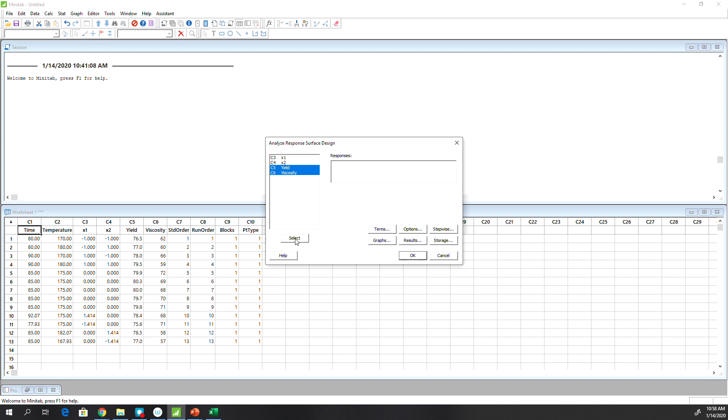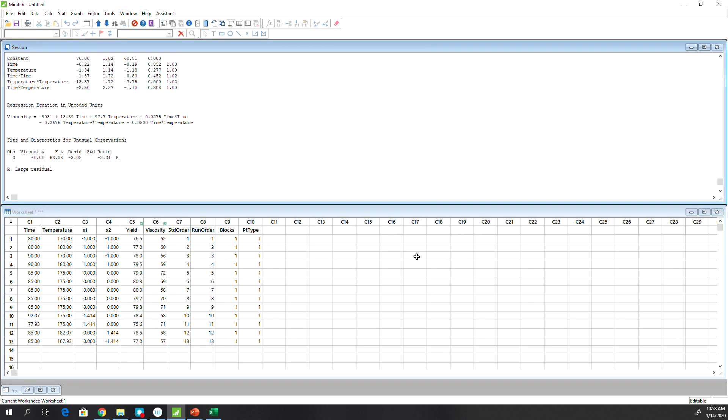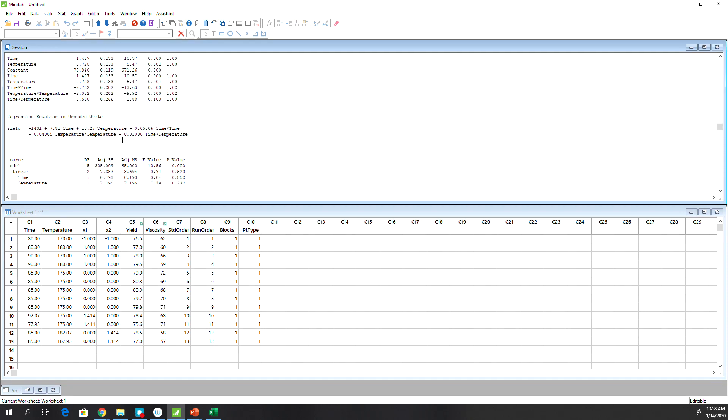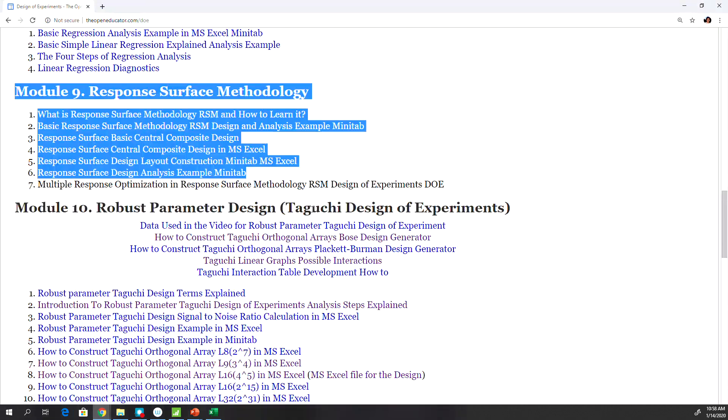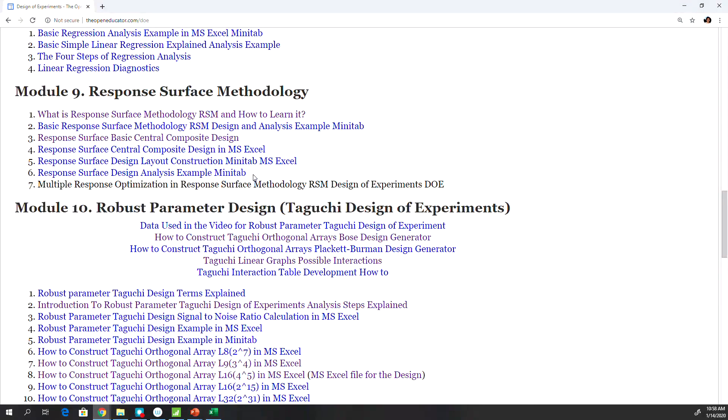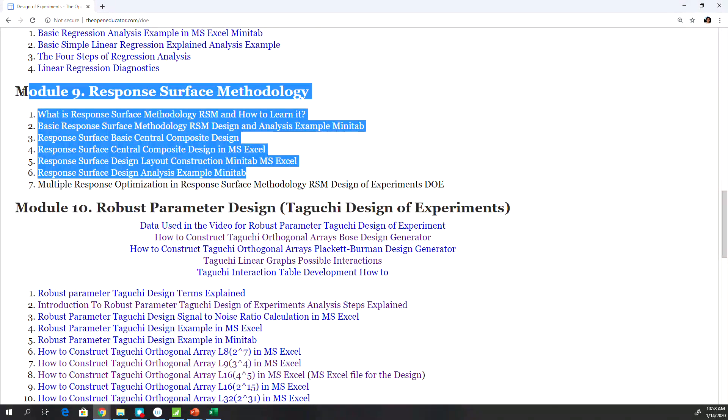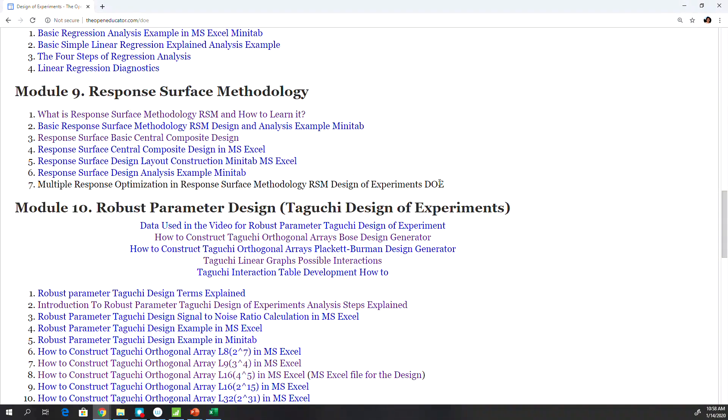I have two responses that I'm trying to optimize, viscosity and yield. And then I'm going to keep everything simple. I will not explain all these detail outputs here. Now, if you're new in response surface, this is the first six videos on response surface under the openinductor.com slash design of experiment or DOE. And then this video I'll be posting right here.